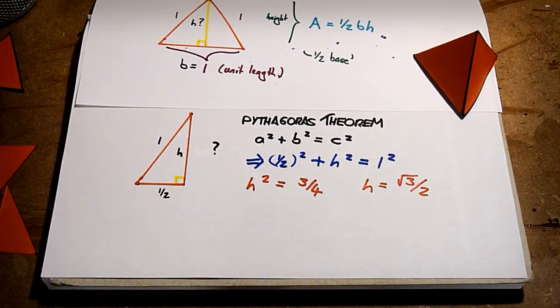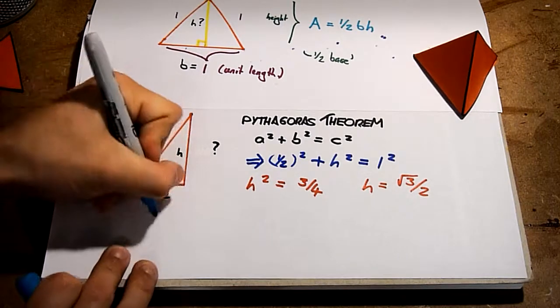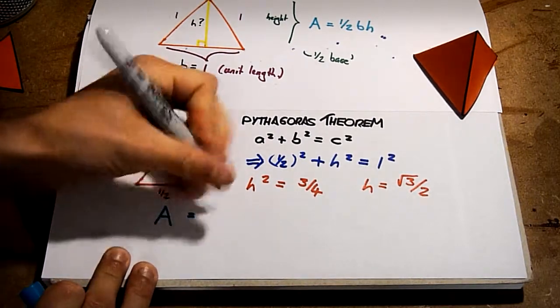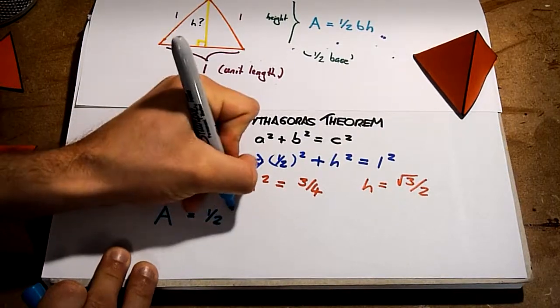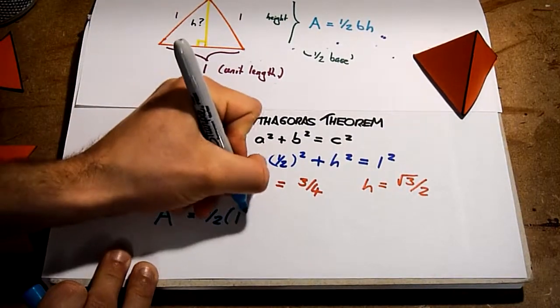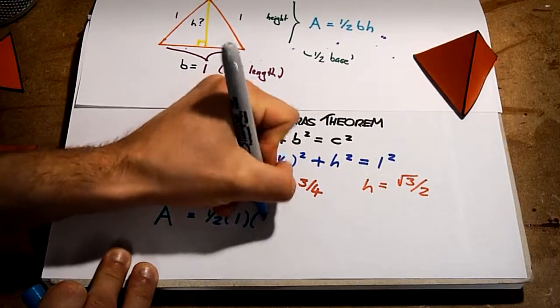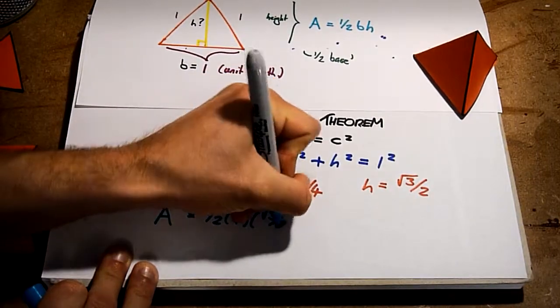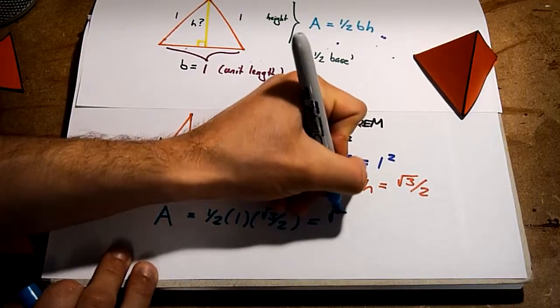So returning to our formula for the area of an equilateral triangle, half base times height, we have a equals a half times base, which is 1, times the height h, which is root 3 over 2, as we just figured out. And so the area of a triangle is root 3 over 4.